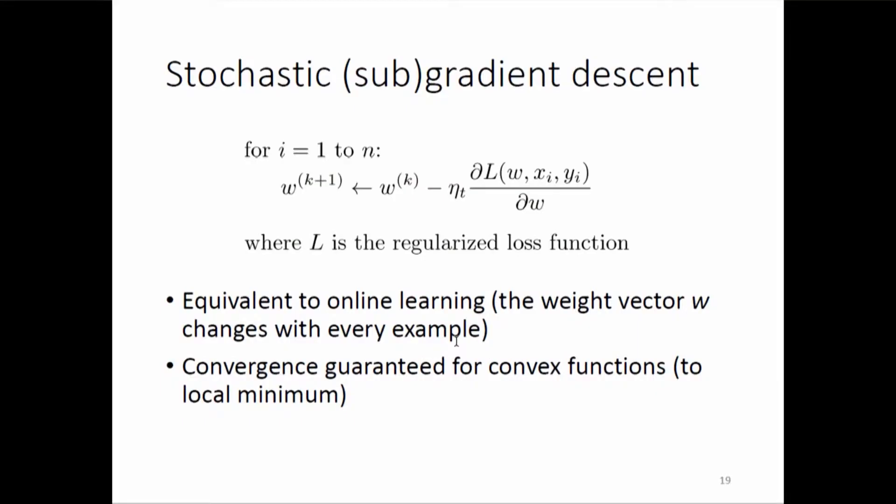Another way to think about it: since your training data is a random sample from the underlying distribution, instead of randomly choosing you can go one by one — first sample, second sample, third sample — computing the gradient and doing the update each time, until convergence.